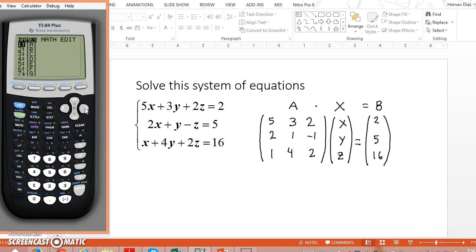So then you go to edit, and you're going to edit matrix A, so you press enter. And you want a 3x3 matrix, so you're going to put 3, enter, and 3. So you have a 3x3 matrix.